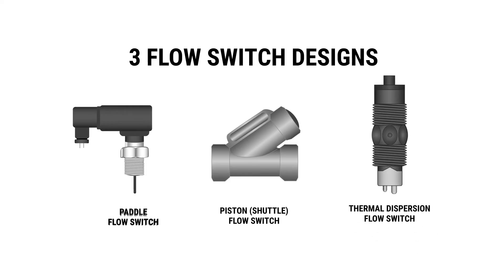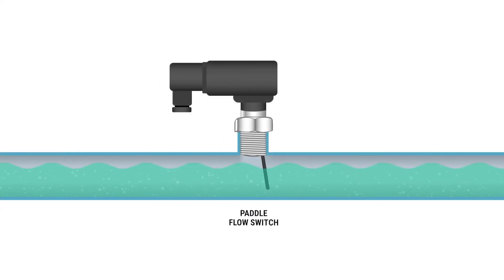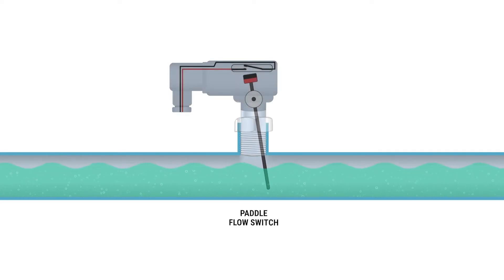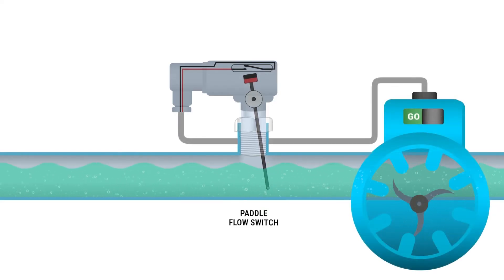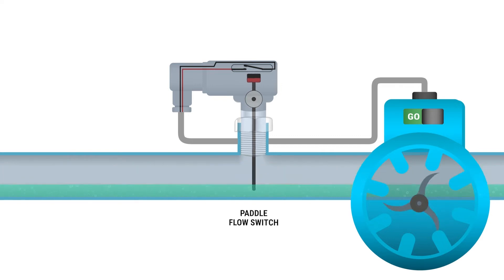First, let's look at a paddle type flow switch. The paddle design flow switch has a hinged or spring-mounted paddle making direct contact with the media flowing through the pipe. Media flowing at the target rate or set point holds the paddle in position. An increase or decrease in the flow rate moves the paddle, which throws a small switch, triggering the specified action.